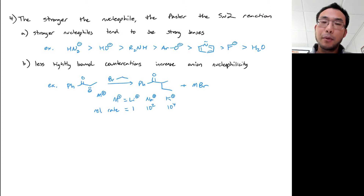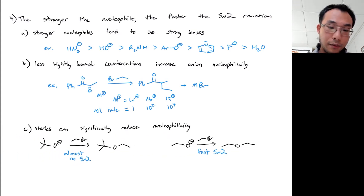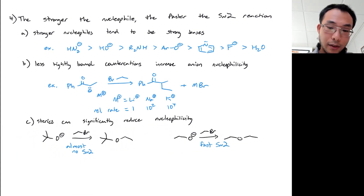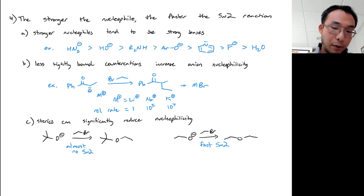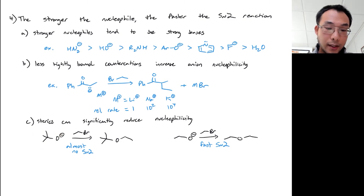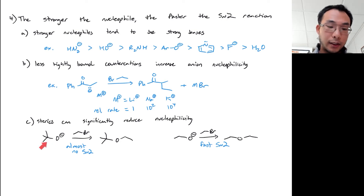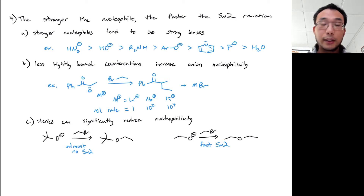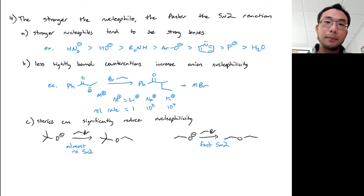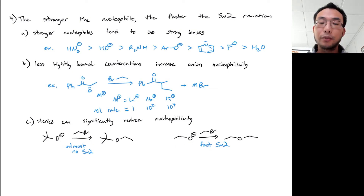Sterics are extremely important — the sterics of the nucleophile can significantly reduce nucleophilicity. For example, tert-butoxide is almost impossible to use in an SN2 reaction because the tert-butyl group is so large. In contrast, ethoxide doesn't have that steric hindrance and undergoes very fast SN2 with the same electrophile.